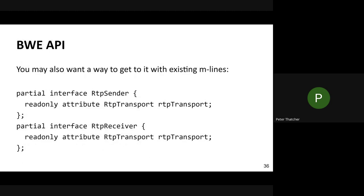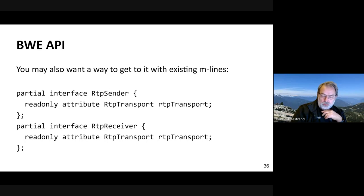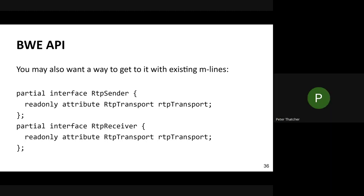Some related API discussions: Harald had a proposal for an API for bandwidth estimation, and the proposal is to build such an API on top of RTP transport. There's a simplified version with an event that says something changed and an attribute for the bandwidth estimate value. Bandwidth estimation is a natural fit for RTP transport and should be added to the RTP transport spec. This would also be of more value if there were a way to get to an RTP transport independent of the createRTPTransport method, by adding attributes to the RTP sender and receiver like we have for DTLS transport.